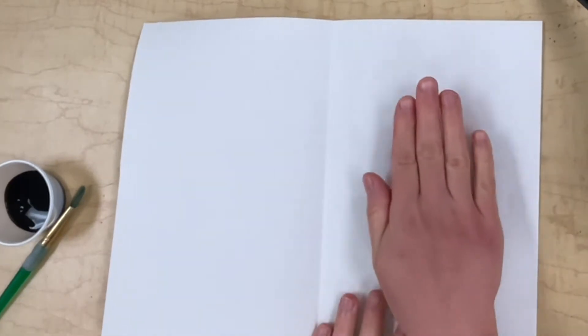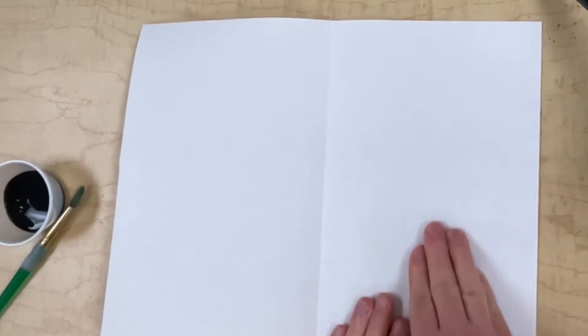Remember, we're only going to paint our butterfly on one side of the paper. We're going to paint half the butterfly on one side.